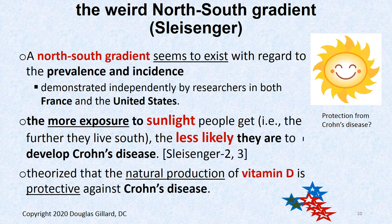There is a North-South gradient, also seen with ulcerative colitis. Two research groups — one in France and one in the United States — studied environmental factors and found that people living further south, closer to the equator with more sunshine, were statistically less likely to develop Crohn's disease. The theory is that natural production of vitamin D has some protective effect against Crohn's disease, and they're still studying this.